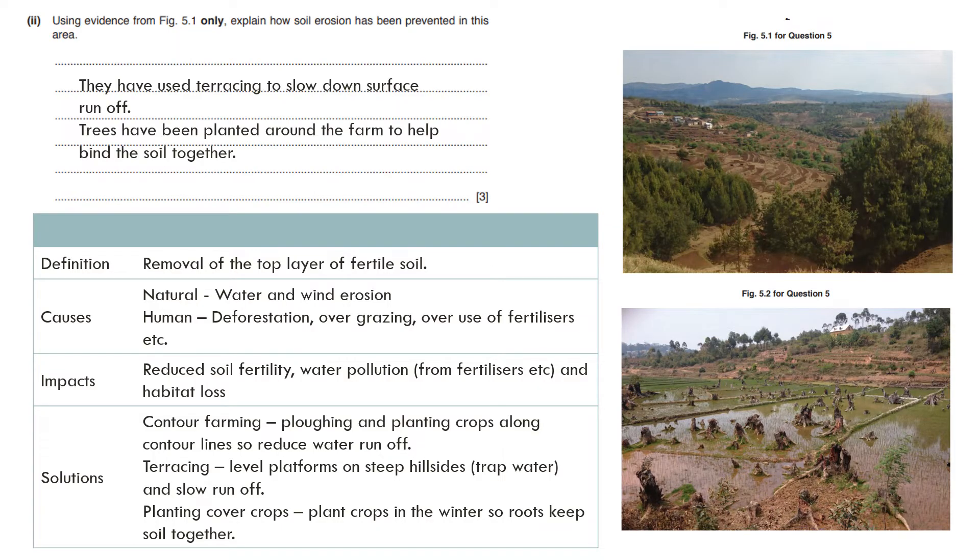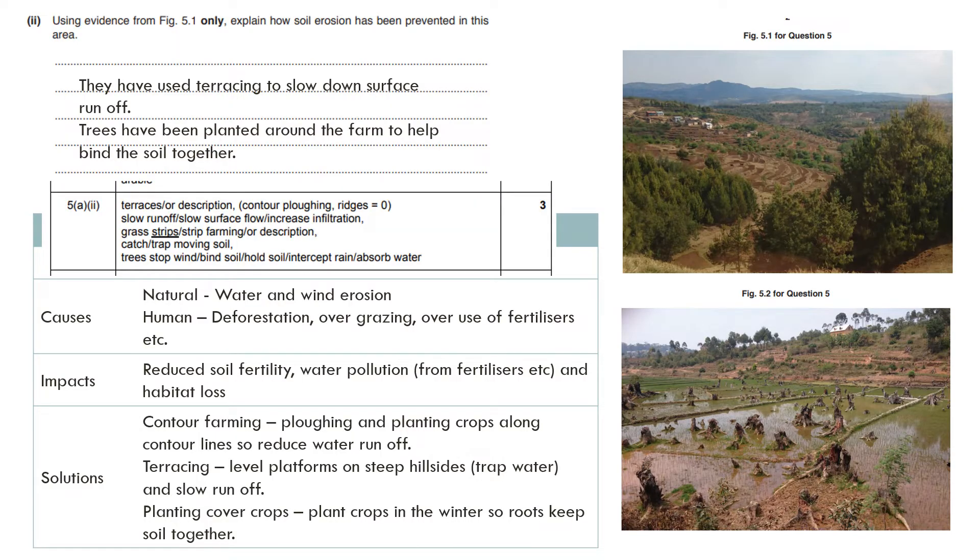I can say they have used terracing to slow down surface runoff. Definitely you can see lots of terraces there and trees have been planted around the farm to help bind the soil together. You can see within these little paddy fields trees have been planted. And there's the masking.